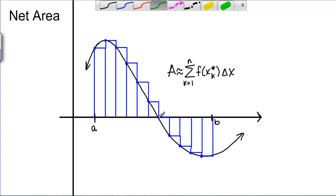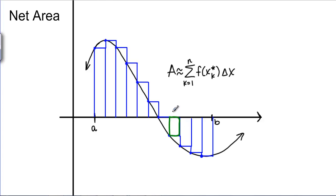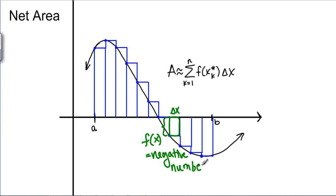Let's see if we can figure this out. Here we have a rectangle that's sitting below the X axis. For this rectangle, the width is still delta X and the height is this length right here, but when we plug into F of X right here, we get a negative number. We know that length can't be negative, and we don't have any way in our Riemann sum formula to account for the fact that this is negative.